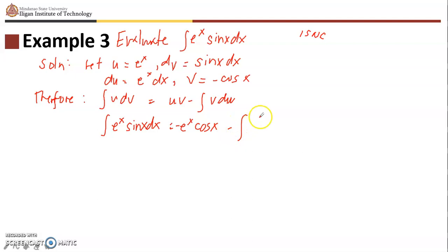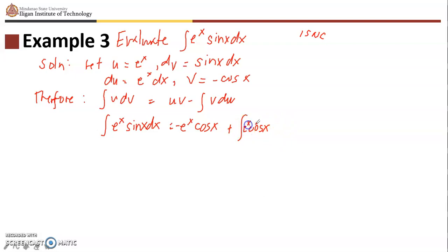Minus the integral of v du: v is negative cosine x, and since we have a negative sign from v and a minus sign from the formula, those two negatives give us a plus. So we get plus the integral of cosine x times e to the x dx. Notice that e to the x cosine x dx is similar to the original integral we started with.